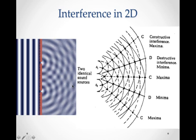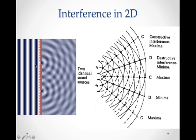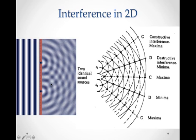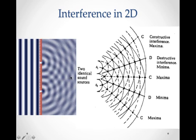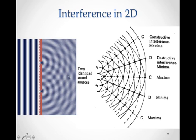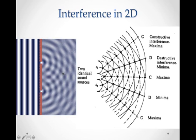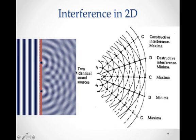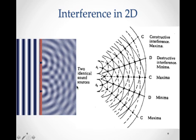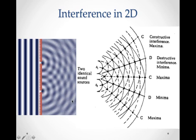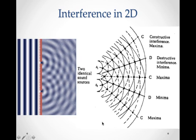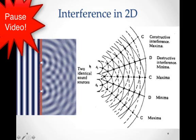Let's look at interference in two dimensions. This is a ripple tank animation where plane waves come in, diffract, and create two circular wave patterns. When they interfere, depending on their path length, they can create constructive interference — a maximum — in the middle area, where you get the high light and high dark region. They can also create destructive interference and cancellation along areas called minima. You get an alternating pattern called an interference pattern between these maxima and minima. This is the illustration you should put in your notes.